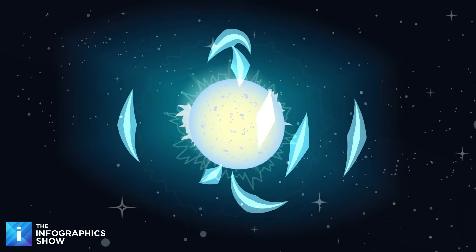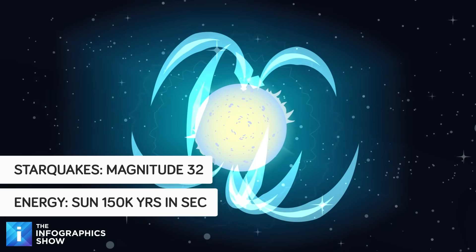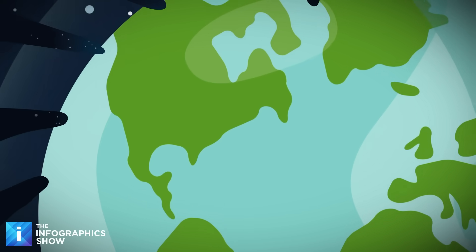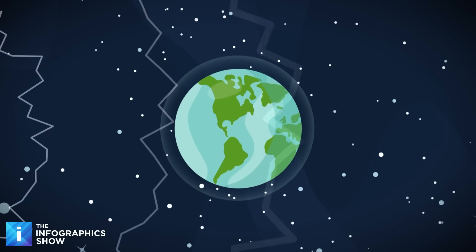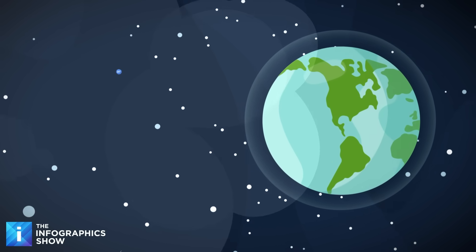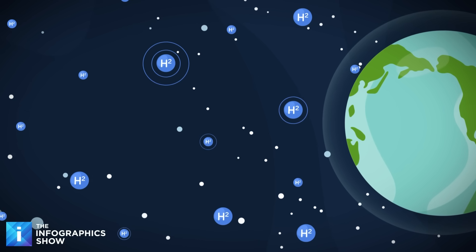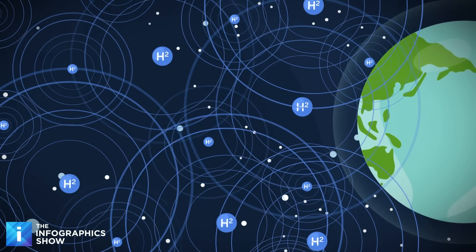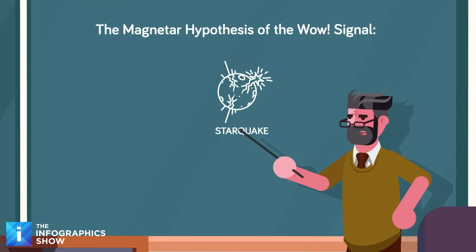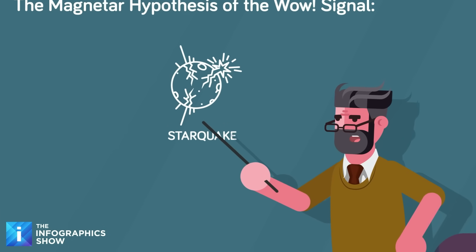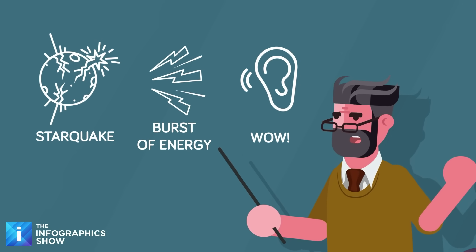Magnetar starquakes clock in at a magnitude of 32, releasing more energy in a fraction of a second than our sun emits in 150,000 years. When a magnetar experiences one of those apocalyptic hiccups, it doesn't just crack its surface. It sends shockwaves through space that can excite hydrogen clouds light years away. These hydrogen atoms then emit radiation at 1420 megahertz, potentially creating signals powerful enough to be detected across vast distances. The magnetar hypothesis explains both the signal's strength and its brief duration. A starquake would create an intense but short-lived burst, exactly matching what the Big Ear observed.